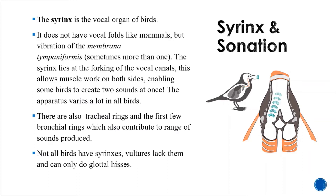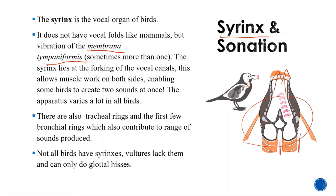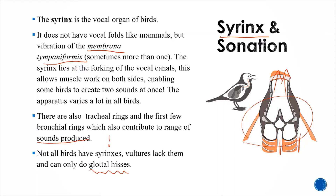The syrinx is the vocal organ of birds. It doesn't have vocal folds like mammals, but it causes vibrations of the membrana tympaniformis — sometimes more than one. The syrinx lies at the forking of the vocal canals, which allows muscles to work on both sides, enabling some birds to create two sounds at once. The apparatus varies a lot in birds, which is why you have different types of birdsong. There are also tracheal rings and the first few bronchial rings which also contribute to the range of sounds produced — those elements can actually fossilize and be found in extinct animals. Not all birds have syrinxes; vultures lack them and can only do glottal hisses.